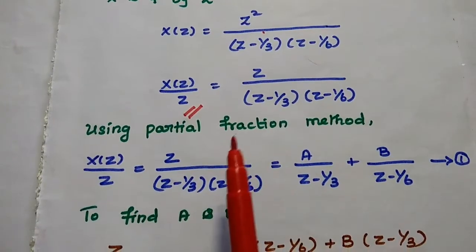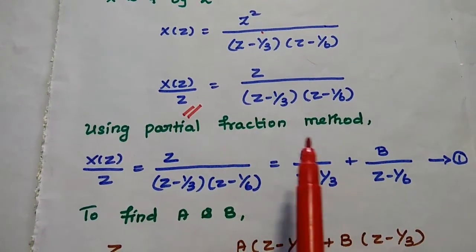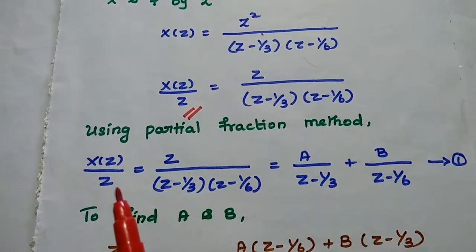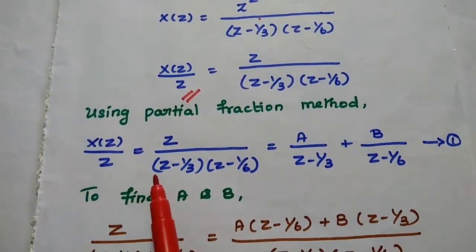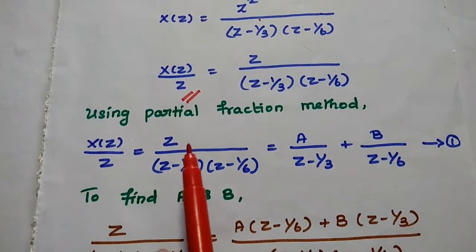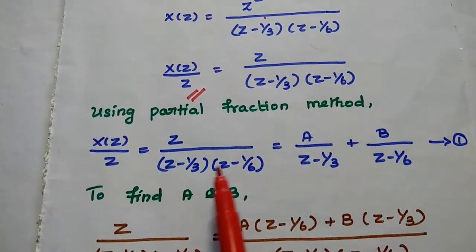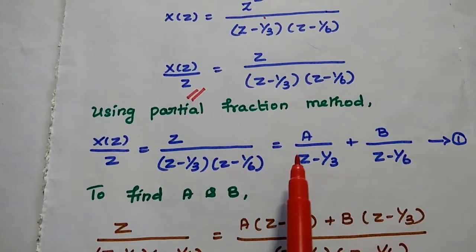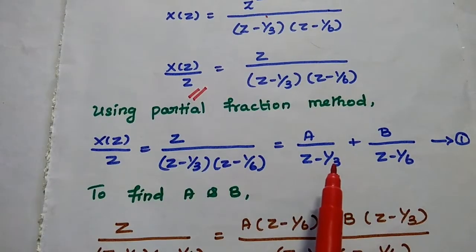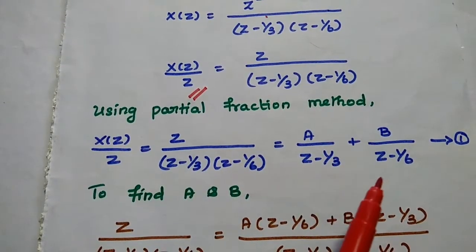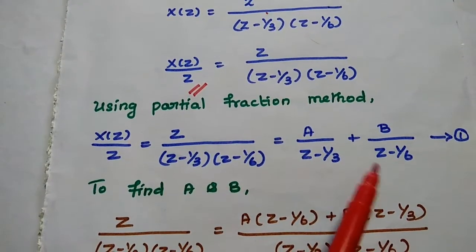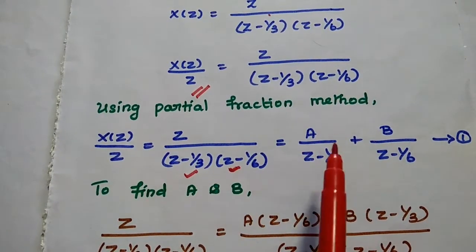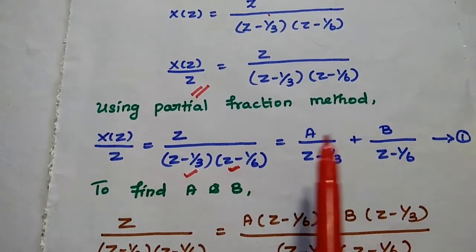So using the partial fraction method, we can write: X(Z)/Z = 1 / [(Z - 1/3)(Z - 1/6)] = A/(Z - 1/3) + B/(Z - 1/6). This is the partial fraction decomposition with two roots, giving us constants A and B.